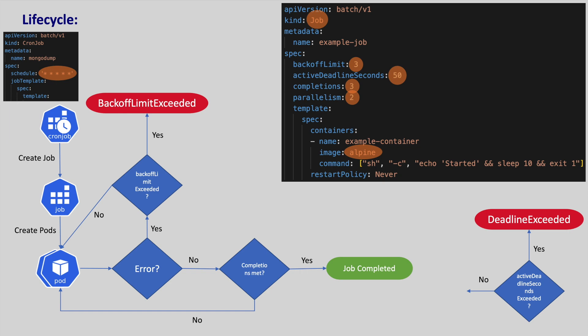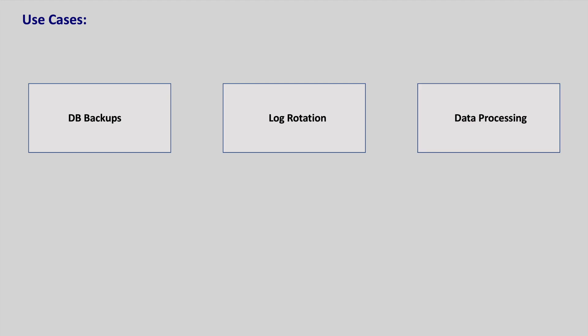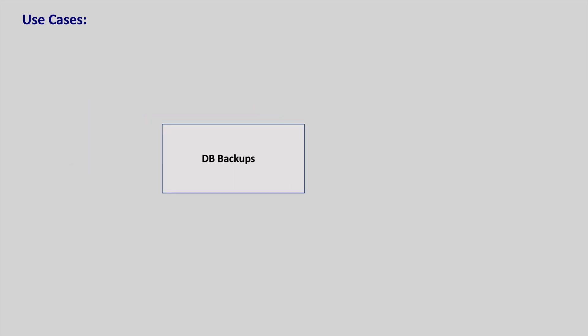Jobs and cron jobs can be used in multiple use cases, like taking database backups — ensuring that our database is always backed up and can be restored later when needed. They can also be used in log rotation to ensure that log files do not grow too large, and we have access to historical log data. We can also use them in data processing like parsing logs, extracting data and transforming data. Enough of theory — let's look at one of these use cases in action.